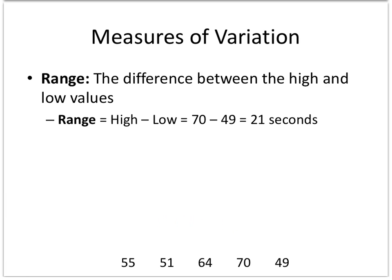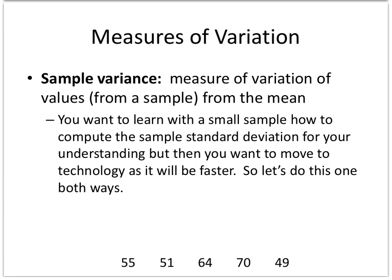The range is just simply finding the high value and subtract the low value, so the range is 21 seconds between 49 and 70. The sample variance is a measure of variation of values from the mean, in other words how far away you are from the mean.